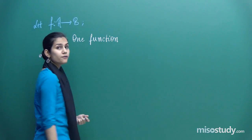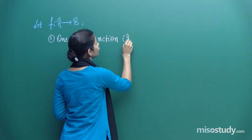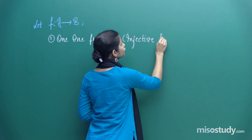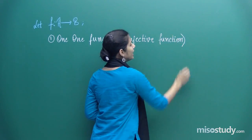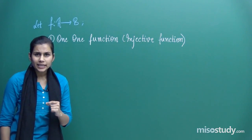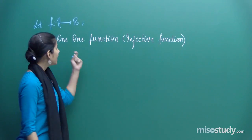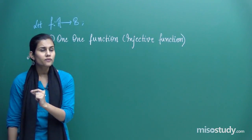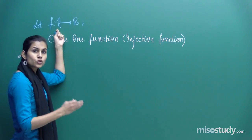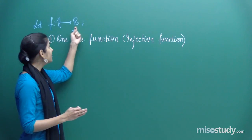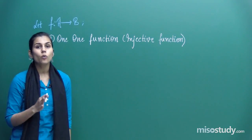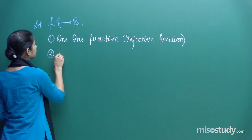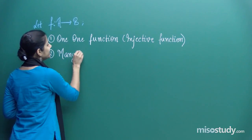Another name for a one-to-one function is that it is also called an injective function. We discussed in detail what it means for a function to be called a one-one function — it has to perform in a certain behavior. When distinct members of set A get mapped to distinct members of set B under the map F, then F is called a one-one function. If the function is not one-one, it is a many-one function.